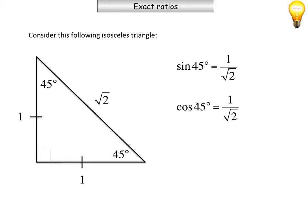Okay, so if we look at adjacent over hypotenuse. So here's our angle. There's adjacent. There's hypotenuse. We end up getting 1 over root 2 again. So our ratio for cos of 45 is 1 over root 2.